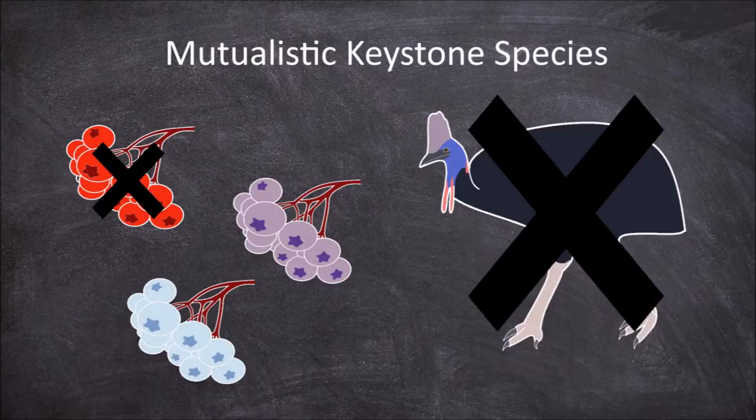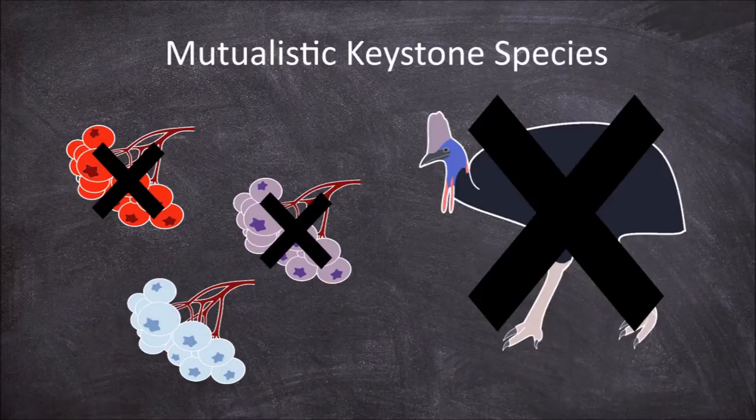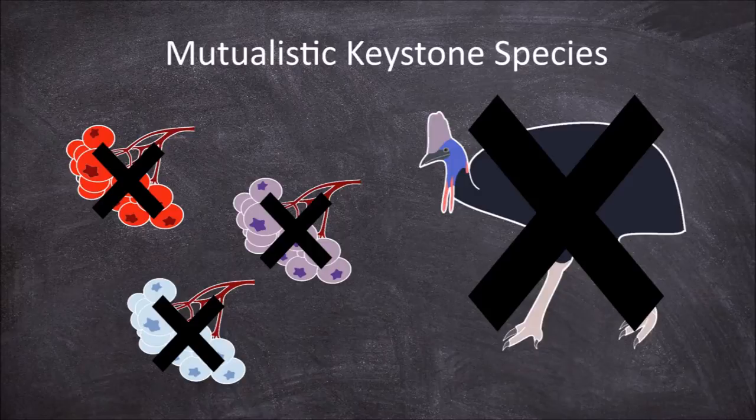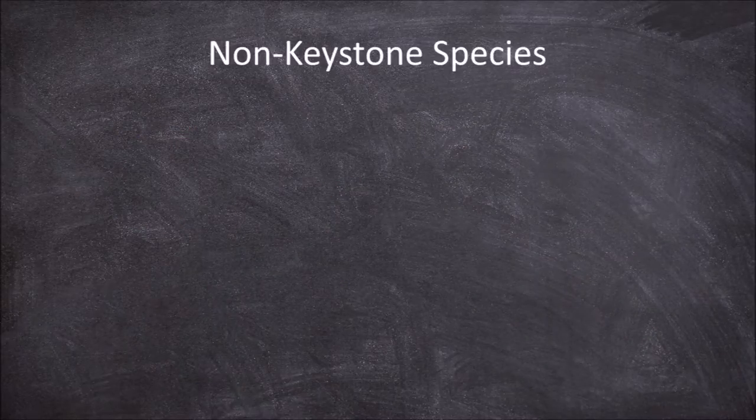There would be no regrowth of these plants and the species composition in the community would change due to this keystone species being removed. If we now compare this example to non-keystone species in a community, there would be several more generalist frugivorous birds who feed on the fruits of several generalist trees.